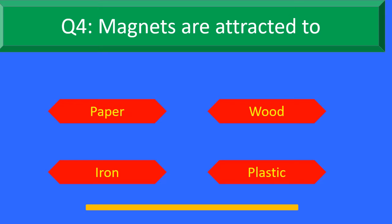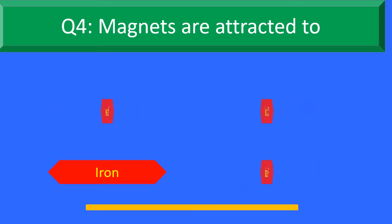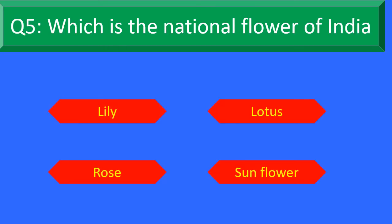The right answer is Option C: Iron. Magnets are attracted to iron. Moving to Question number 5.